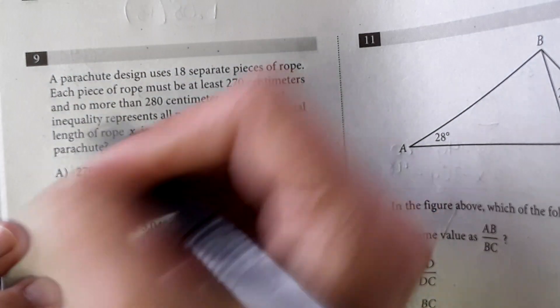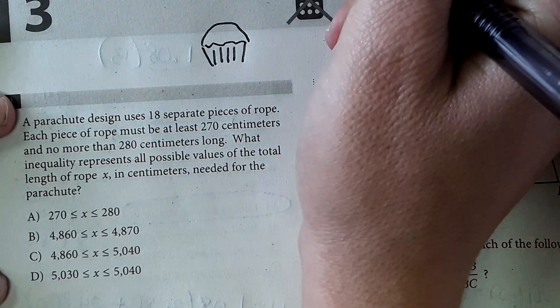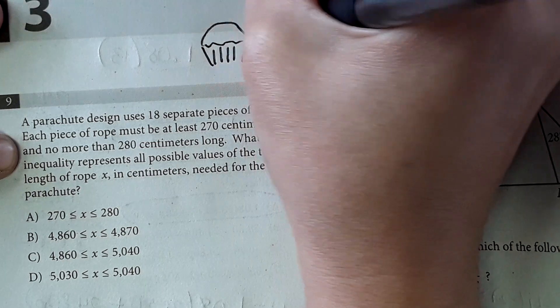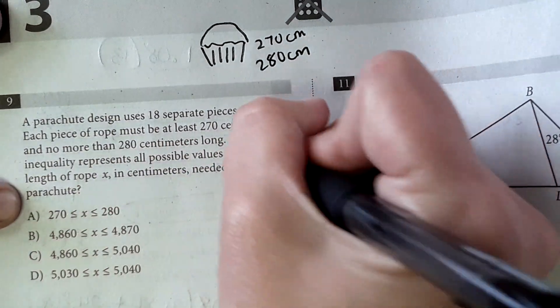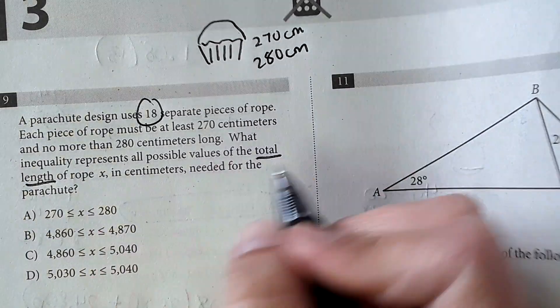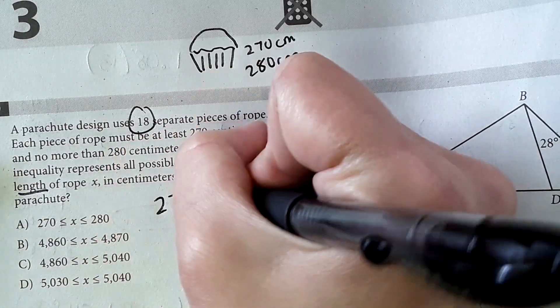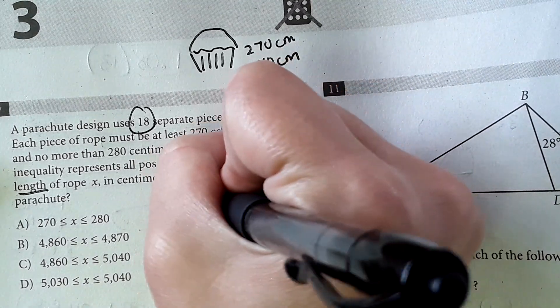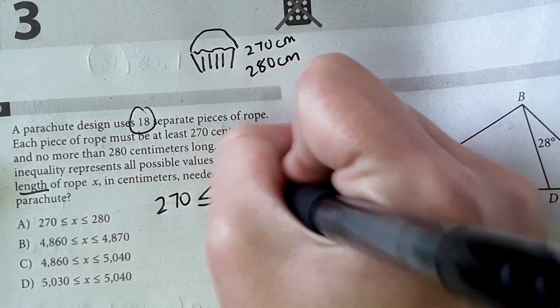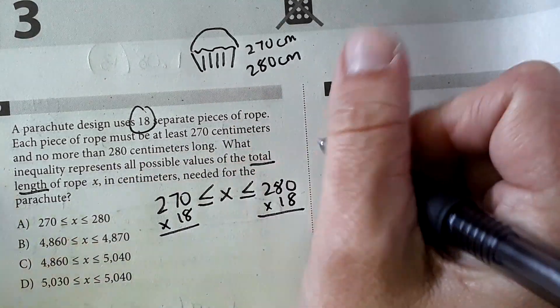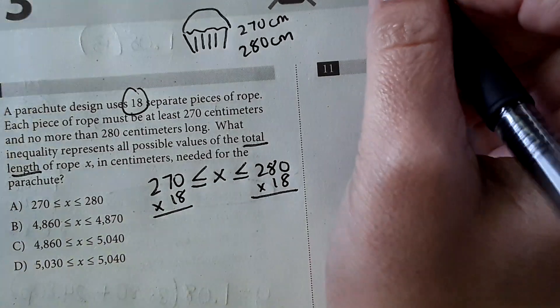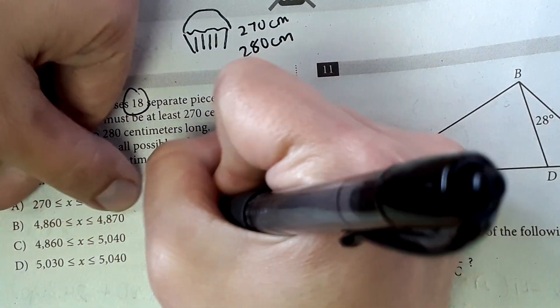Okay, we are almost halfway done with this section already. Now number 9. A parachute uses 18 separate pieces of rope. So parachute right here, 18 separate pieces of rope coming down from that parachute. Each piece of rope must be at least 270 centimeters and no more than 280 centimeters. What inequality represents all possible values of the total length, so that means all 18 pieces of rope in centimeters needed for the parachute. So right now I'm just writing, okay, so the length of the rope has to be greater than or equal to 270 and less than or equal to 280 in between that range. But we're talking about all 18 pieces, so we actually have to multiply this by 18 and multiply this by 18. Can't use a calculator, so we have to do multiplication kind of like the old-fashioned way, the fourth-grade way.